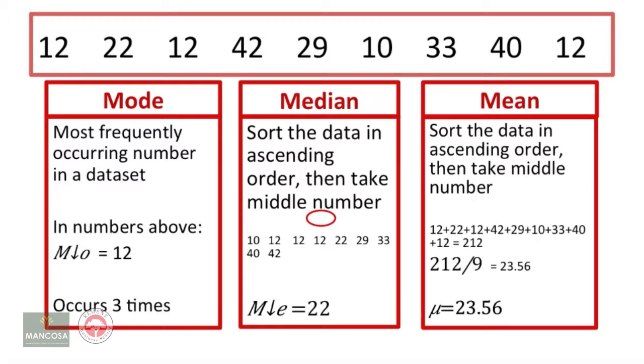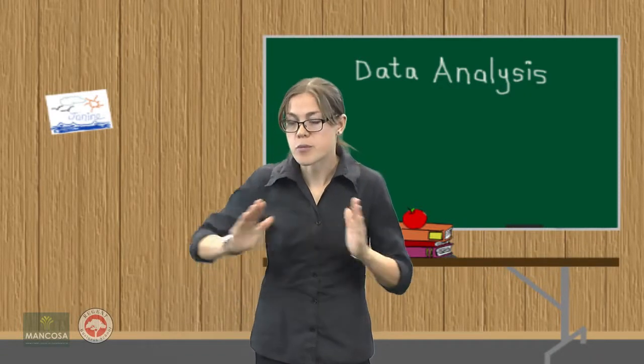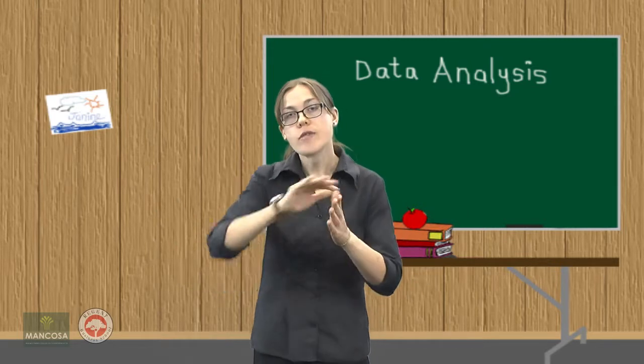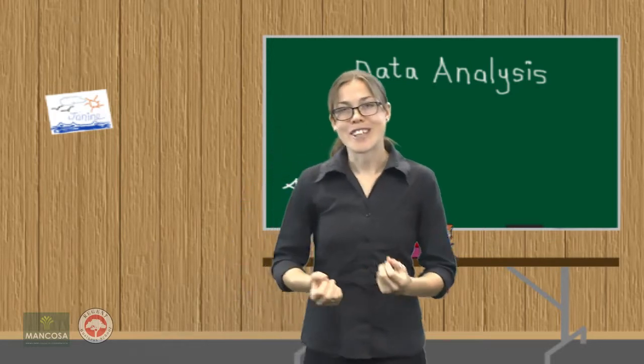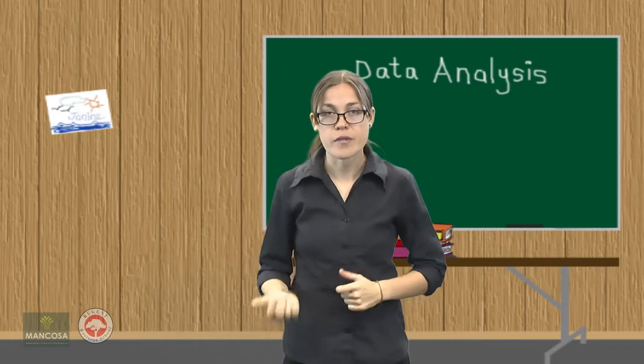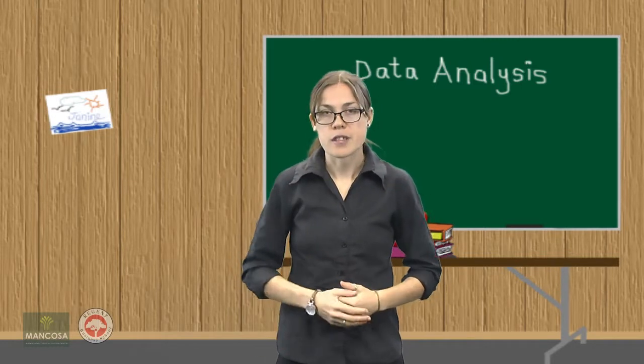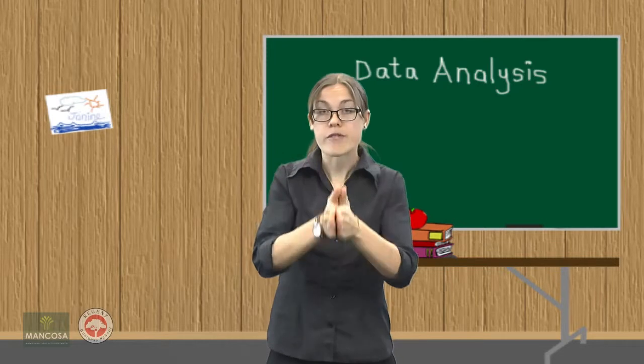Lastly, we have the mean and this tends to be used mostly with ratio level data, whereby we add all the scores together and then divide by the total number of scores in that data set. The third manner in which we summarize data is by looking at the spread or the dispersion of the scores around the center or the middle of the distribution. This can be mainly done by looking at the range, the interquartile range, standard deviation, and variance. Most popular of these is the standard deviation or the units that a particular score falls away from that mean.